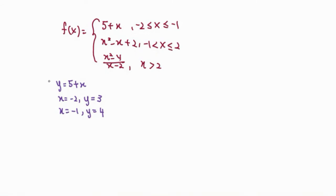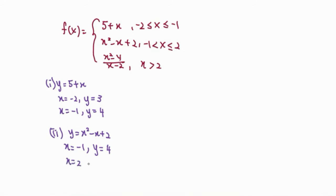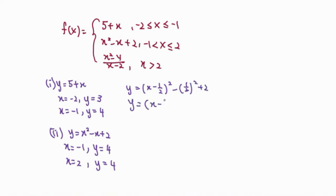For the second piece, the quadratic is y equals x squared minus x plus 2. The starting point at x equals negative 1 gives y equals 4, and the ending point at x equals 2 gives y equals 4. Completing the square gives y equals (x minus 1/2) squared plus 7/4, so the minimum point occurs at x equals 1/2, y equals 7/4.